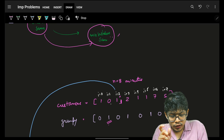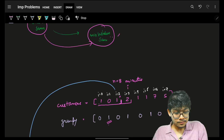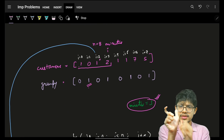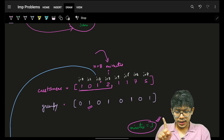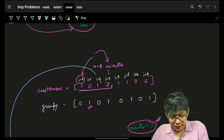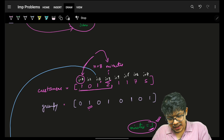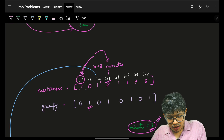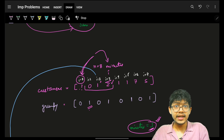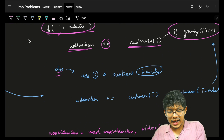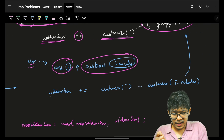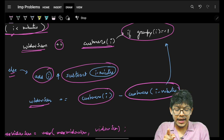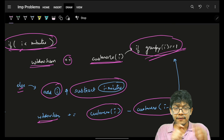As we shift the window to the next element, the new incoming element customers[i] is added, but we also remove customers[i - minutes] since the window size must stay fixed. We only add or subtract those values when the corresponding grumpy value is 1. This is how we slide the window while maintaining the correct window sum for grumpy minutes only.